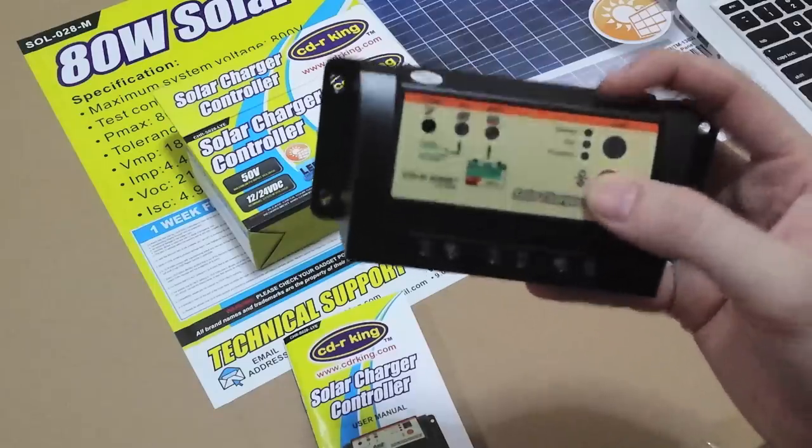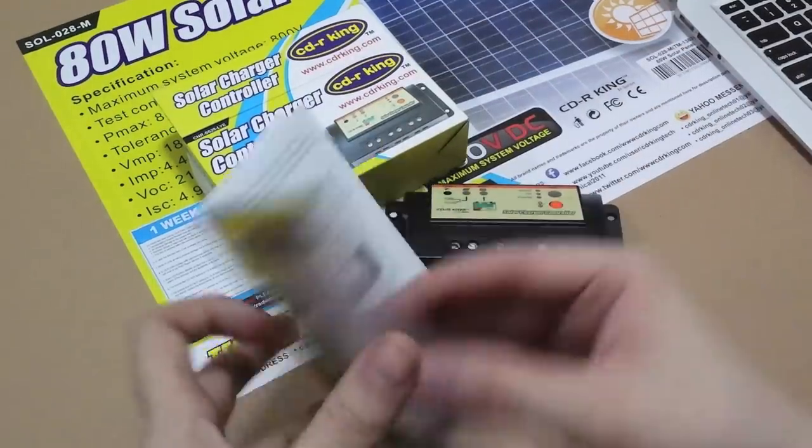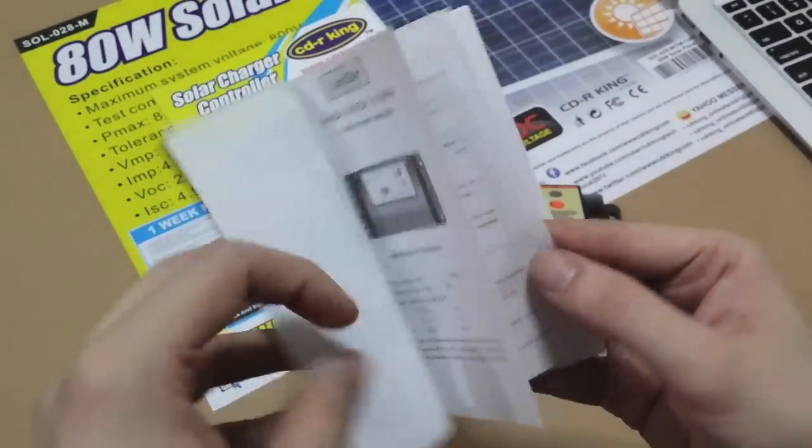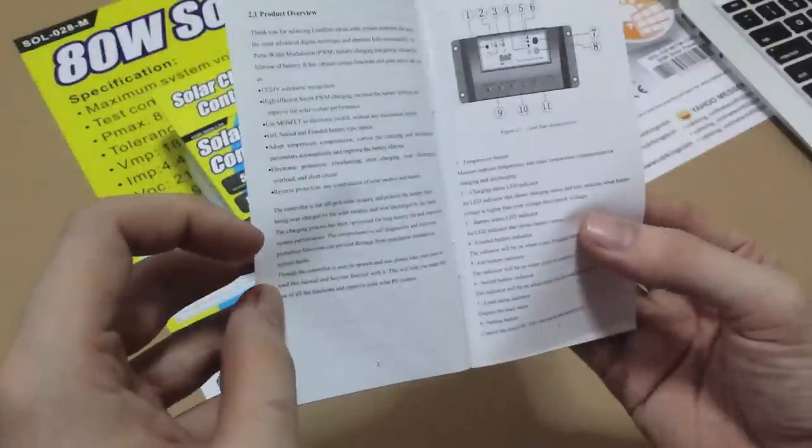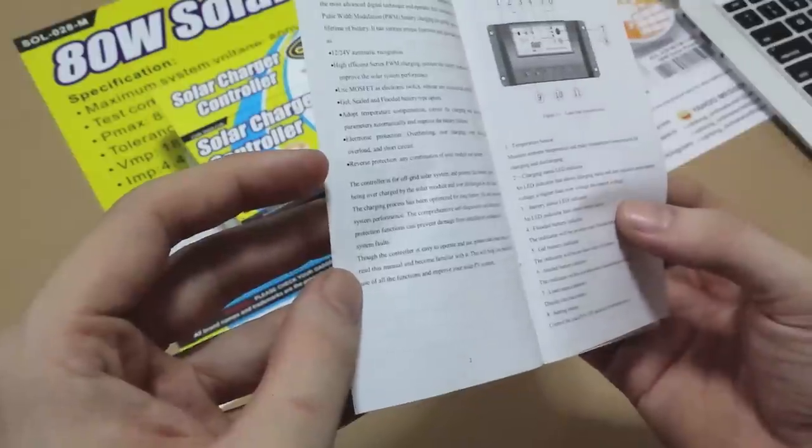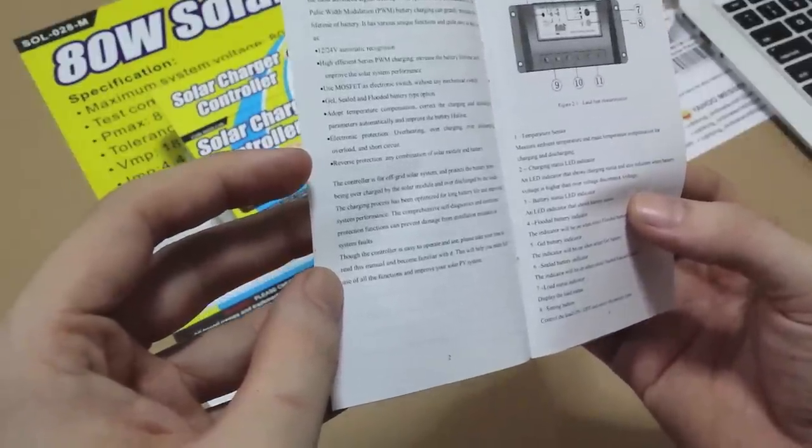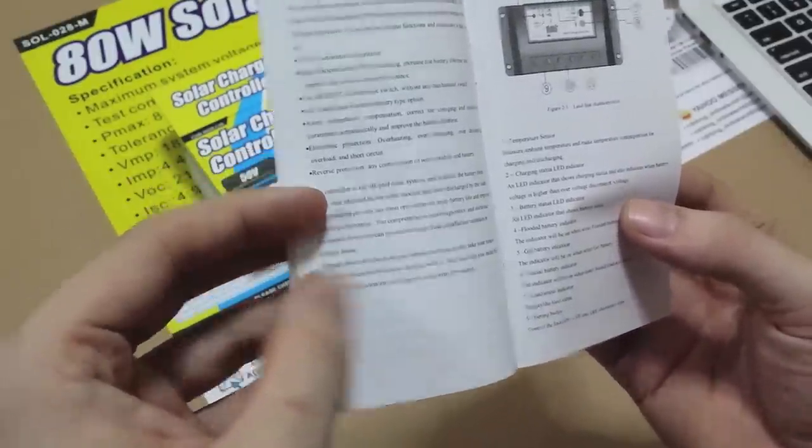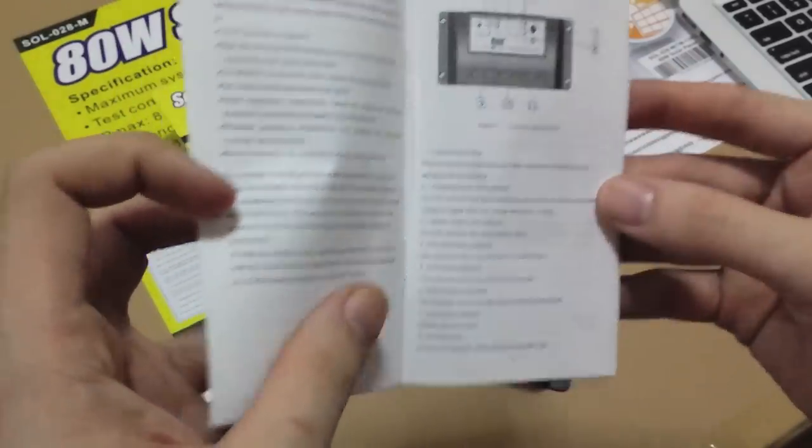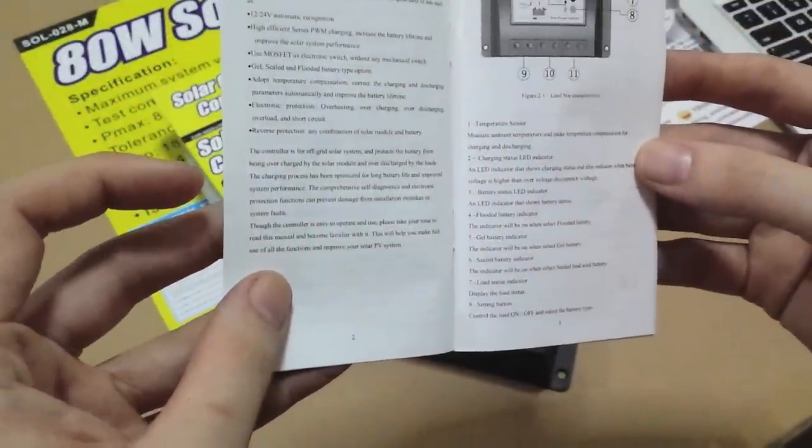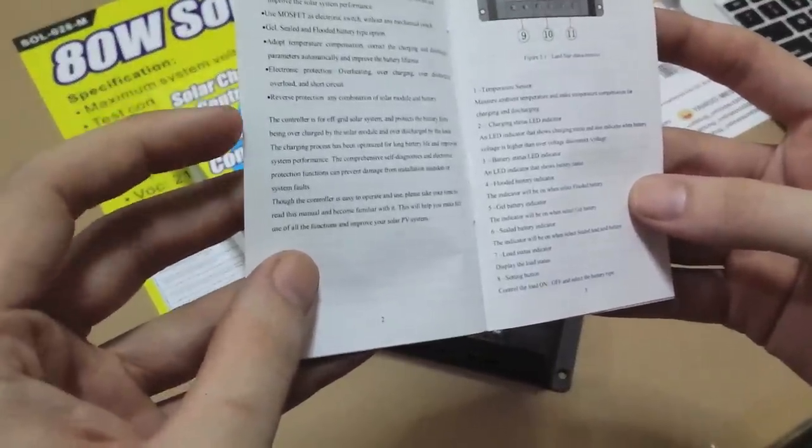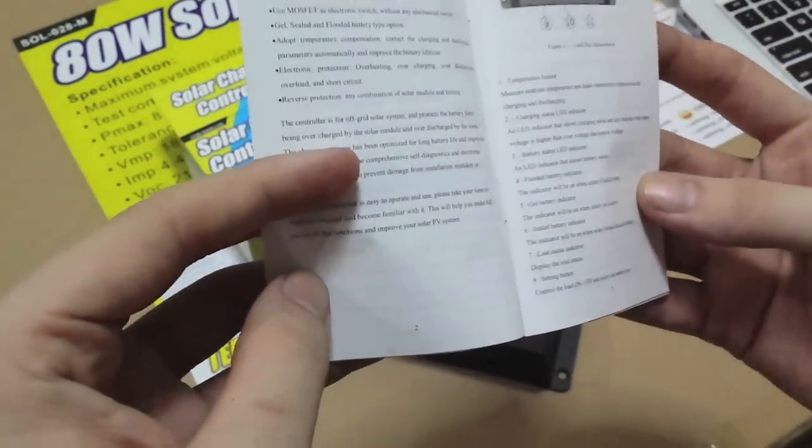We've got a button here. Not sure what that does. Let's have a look at the instructions manual. Suitable for 12 or 24 volt batteries. It automatically detects. Pulse width modulation, of course, because it's cheap. It's got a MOSFET inside without any mechanical switch. But that definitely sounds like there's a relay in there. It can work with gel, sealed, flooded batteries. Reverse protection, protection against overheating, overcharging, etc.